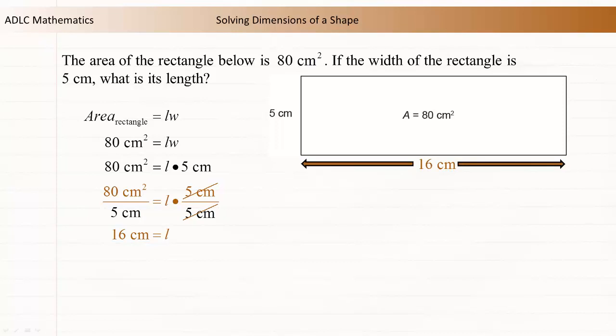The length of a rectangle with an area of 80 cm squared and width of 5 cm is 16 cm.